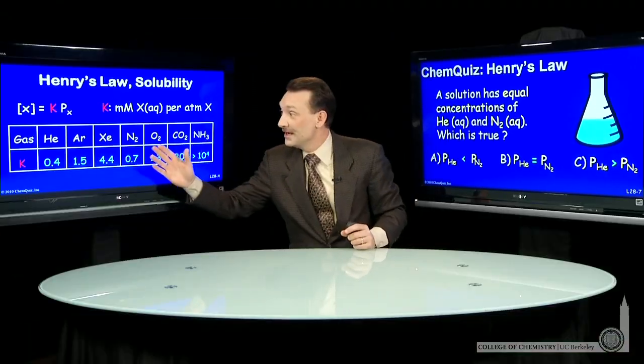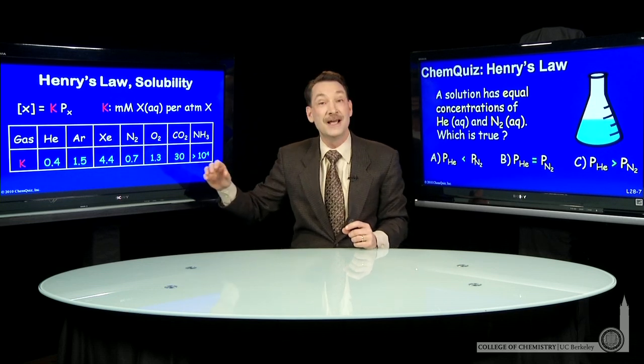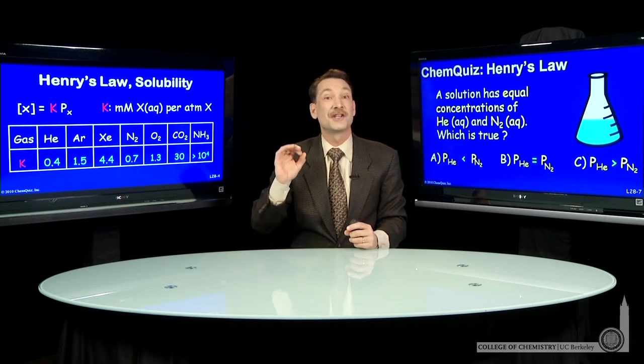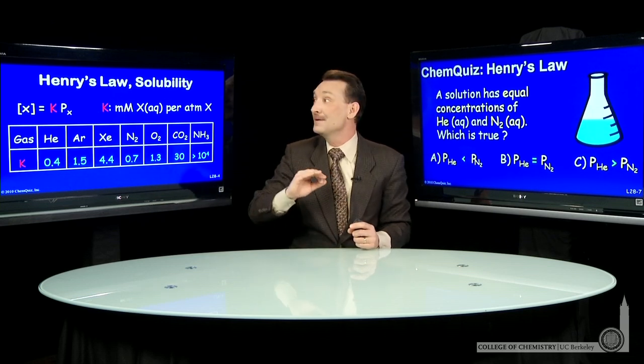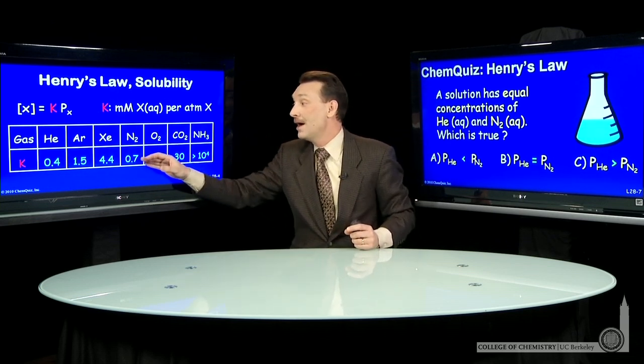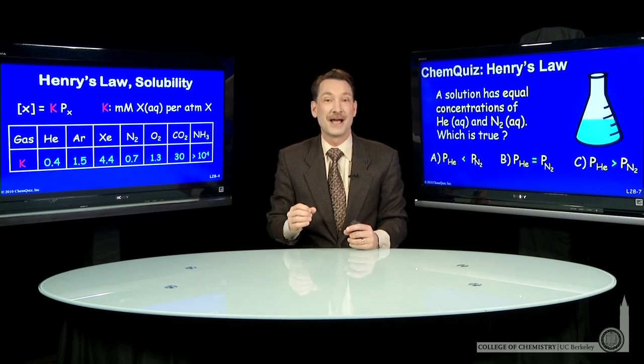And I have them here. Here's helium: 0.4, and nitrogen: 0.7. So nitrogen has the larger K, so it favors the aqueous form slightly more—slightly more soluble nitrogen gas than helium gas.